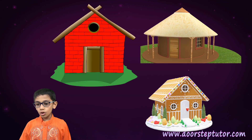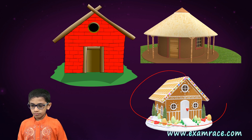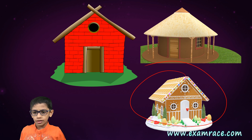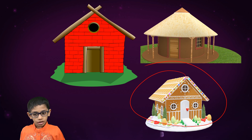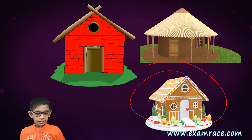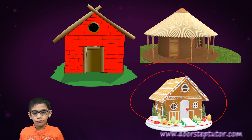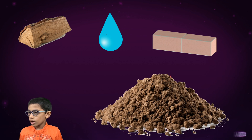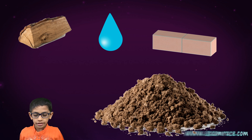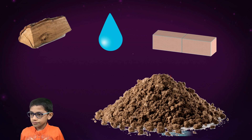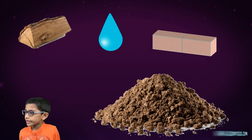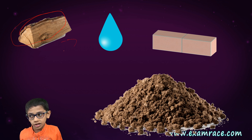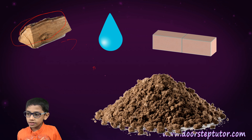Do you know how your house is made? Our houses are made of cement and brick. Cement is made of sand, and brick is made from clay, water, and more. Water comes from lakes, ponds, and so on. Our houses are also made of wood. The wood comes from trees, and trees come from seeds.